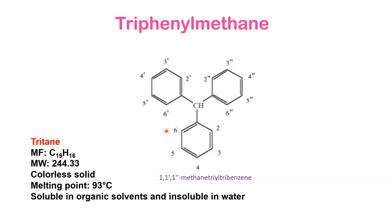We number all the benzene rings from one to six. The first number is given to the carbon bearing the central carbon, so that ring is numbered one, two, three, four, five, six. Similarly the second ring is numbered one-dash, two-dash, three-dash up to six-dash. The third ring is one-double-dash, two-double-dash, three-double-dash up to six-double-dash. So the IUPAC name is 1,1-dash,1-double-dash methane triyl tribenzene.